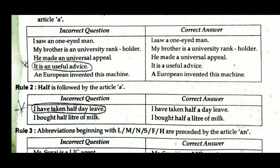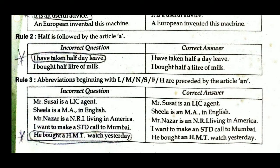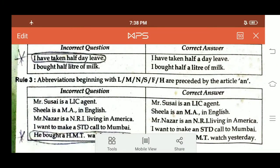Rule 3: Abbreviations beginning with L, M, N, S, F, H are preceded by the article 'AN'. For example, 'Mr. Suzy is a LIC agent' is incorrect; correct is 'Mr. Suzy is an LIC agent.' Similarly, 'Sheila is a MA in English' is incorrect — correct is 'Sheila is an MA in English.' Whenever you find abbreviations, they should be preceded by 'AN'.